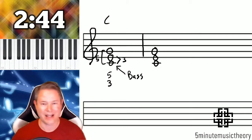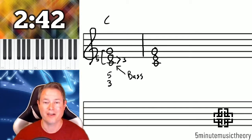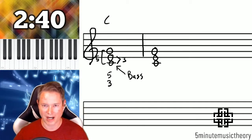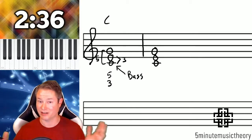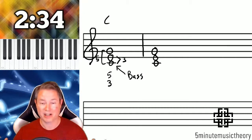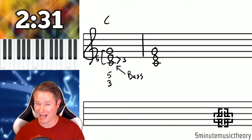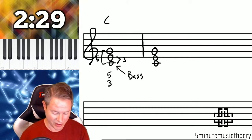Now, the thing is that root position triads happen so commonly that we abbreviate that 5-3 by not putting anything there. So if we leave that blank, that's indicating, it's implying that there's a root position triad there. So the common bass position symbol for a root position triad is just to leave this symbol blank. Sometimes we do need to write the 5-3, but that's only to cancel out another bass position symbol.